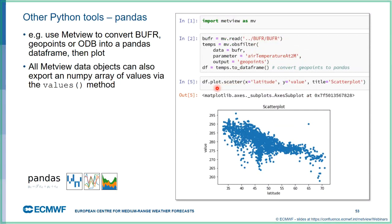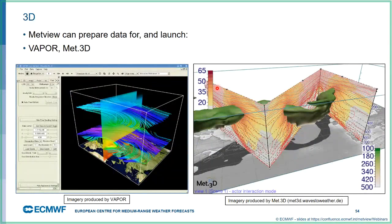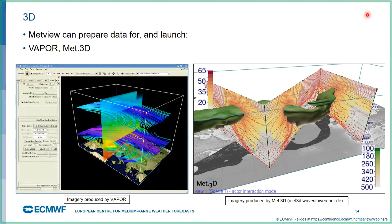Metview does not directly produce 3D plots, but it can interface with two different 3D packages — if you have either Vapor or Met3D installed and know how to use them (3D packages are not usually straightforward), then you can use Metview to prepare input data for them and to launch them. We certainly have people here who work a lot inside the Metview environment and find it very convenient not to have to leave it to launch these applications and get a 3D look at their data.